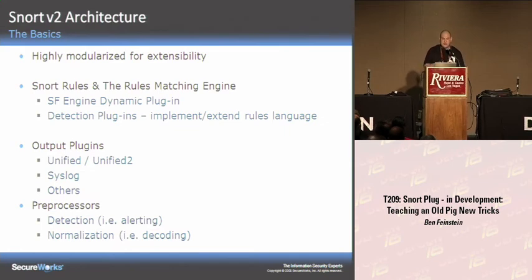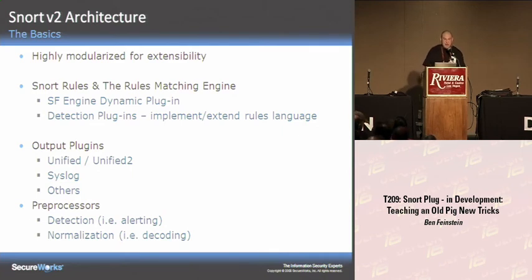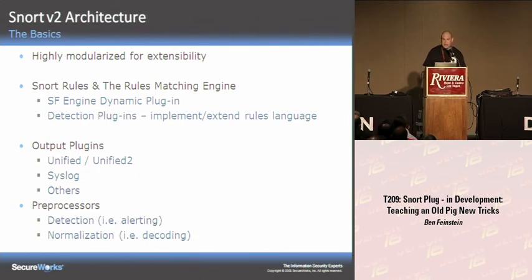You've got two classic types of preprocessors. Detection preprocessors look at traffic and generate alerts — in an inline scenario they may drop traffic or send resets. Normalization preprocessors decode and normalize traffic before it's presented to other plug-ins and to the Snort rules-matching engine. For instance, HTTP inspect is a preprocessor that does normalization of HTTP requests, so other rules and preprocessors can then inspect the decoded traffic.